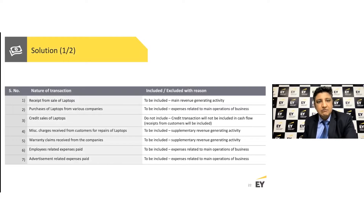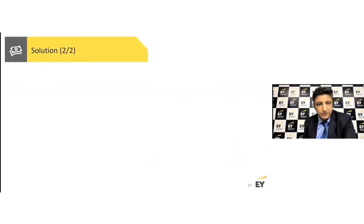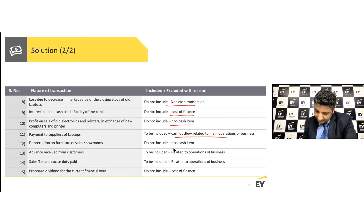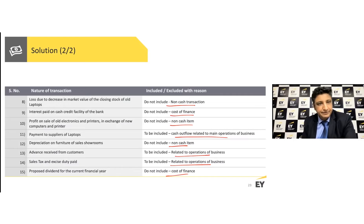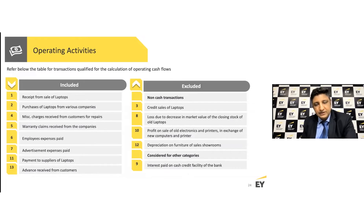To summarize the reasoning: receipts from laptop sales are included because it's the main revenue-generating activity. Credit sales are excluded as they are non-cash. Repair charges and warranty claims are revenue activities — operating. Employee and advertisement expenses are operating. Inventory write-downs are non-cash. Interest paid is financing. Book profit on asset exchange brings no cash. Depreciation is non-cash. Advance receipts and sales tax are operations. Dividend payments, if any, are financing.